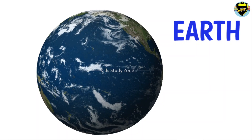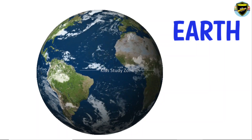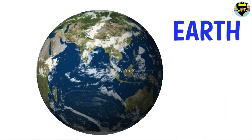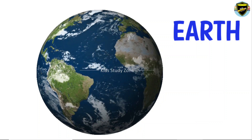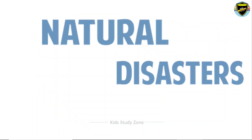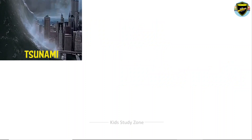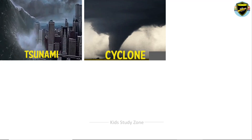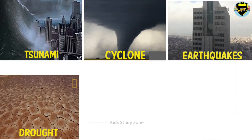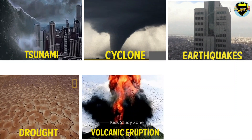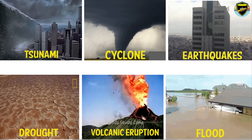Some examples include flood, tornados, volcanic eruption, earthquake, tsunami, storm and other geological processes. In this video we are going to learn and understand about some of the natural disasters like tsunami, cyclone, earthquake, drought, volcanic eruption and flood.